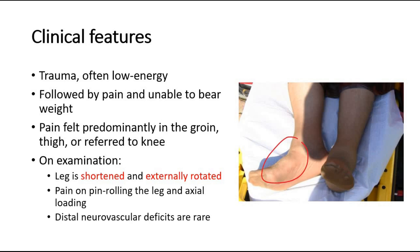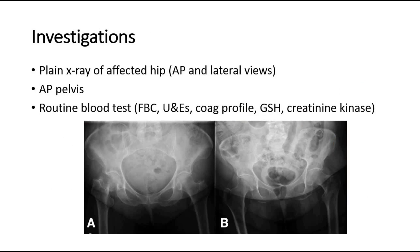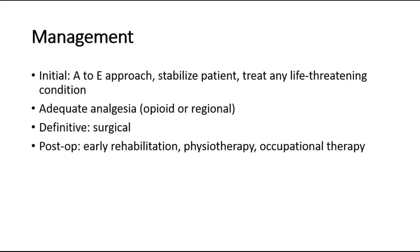For investigations, initial plain film radiographic imaging should include AP and lateral views of the affected hip, as well as an AP pelvis to assess the contralateral normal hip. Basic routine blood tests are required, and creatinine kinase can be checked for any rhabdomyolysis.